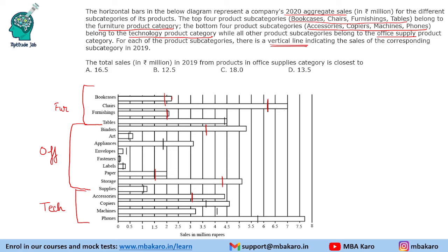Based on this data, we need to answer the questions. The first question asks: the total sales in 2019 from products in the office supply category is closest to. Since the question says 'closest to,' we need to find the approximate value. It is difficult to read exact values — for example, binders is between 3.5 and 4, so it could be 36 or 37.